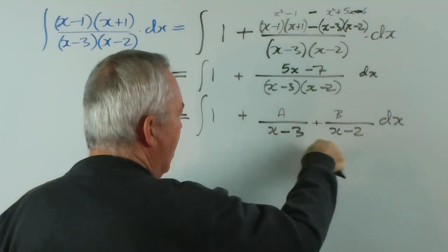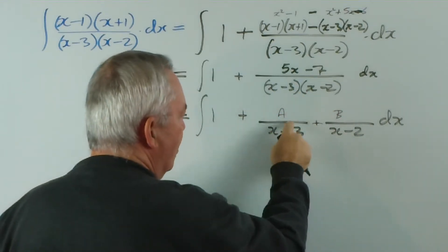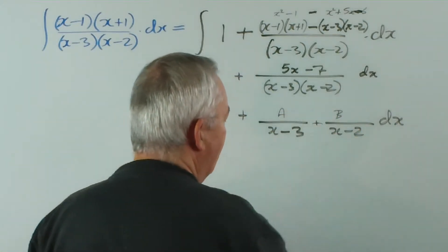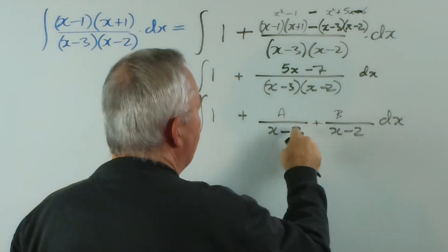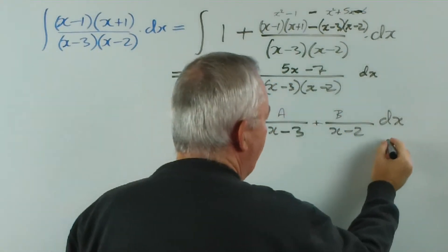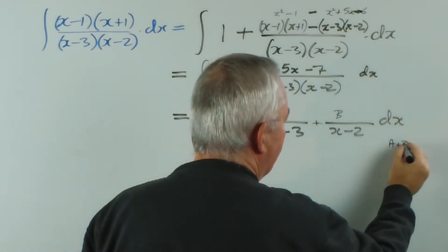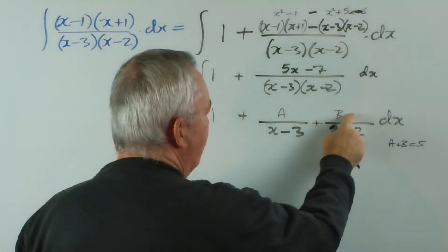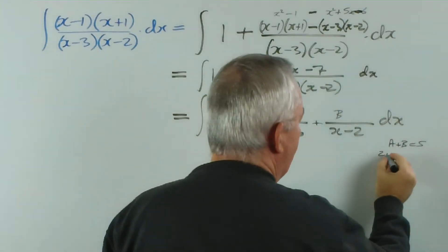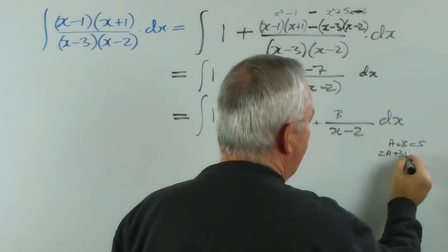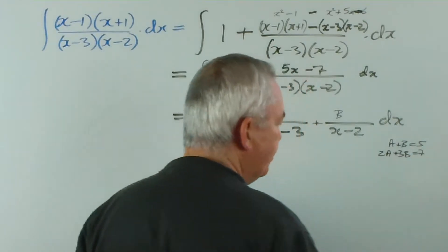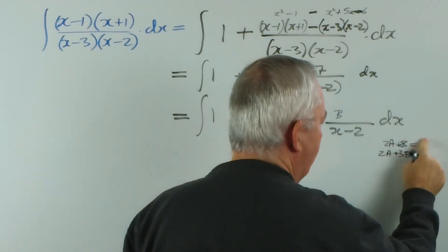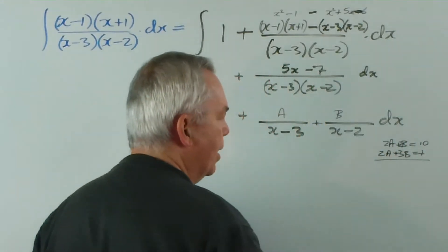When we multiply, when we add these fractions together, we're going to get a times x minus two and b times x minus three on the top. That is going to give us ax plus bx, so a plus b will equal five. And we're going to get negative two a, negative three b equals negative seven. So two a and three b will equal seven. Now if I double everything on the top, two, two, and ten, we have simultaneous equations.